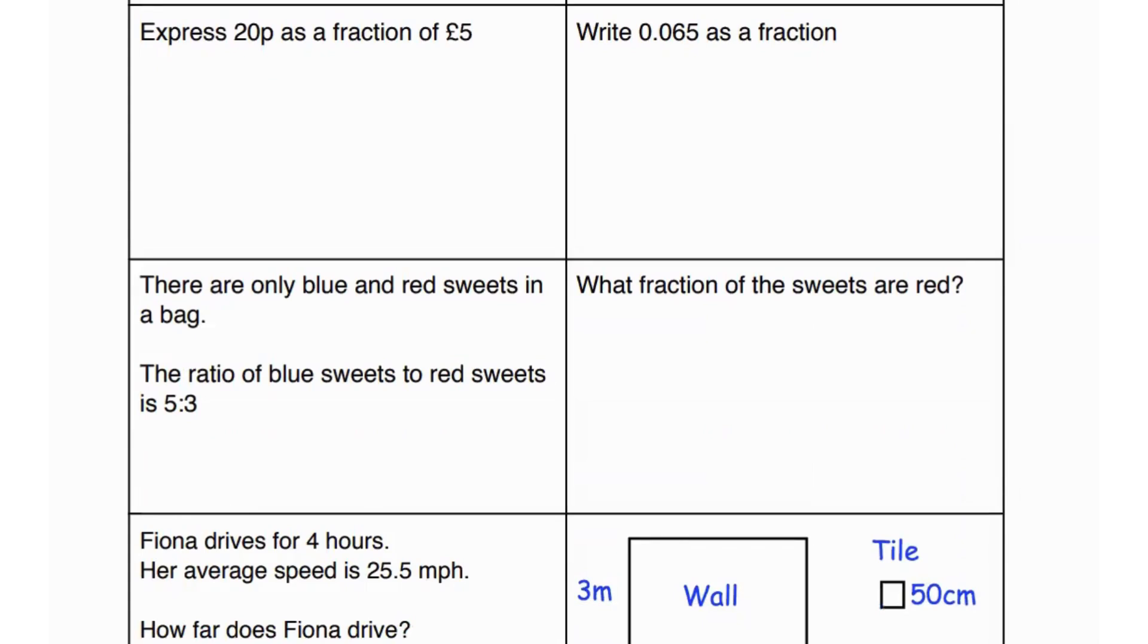Next question says express 20 pence as a fraction of five pounds. Now one pound is equal to 100 pence. That means five pounds will be 100 times five, which is 500. So the fraction will be 20 over 500. Cancel out the zeros. Two over 50 is 1 over 25. That is your answer.